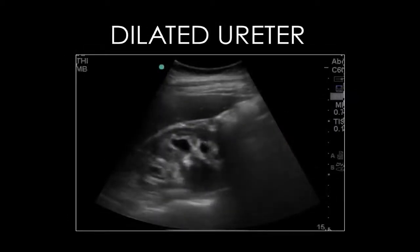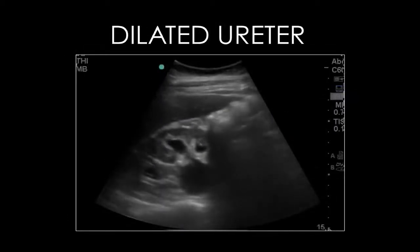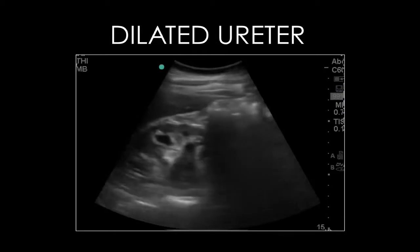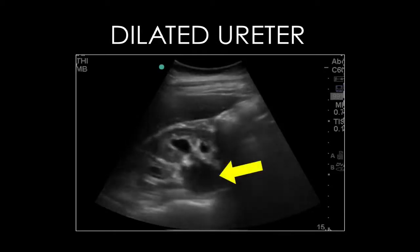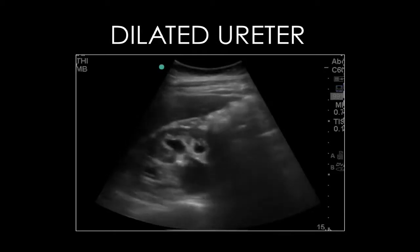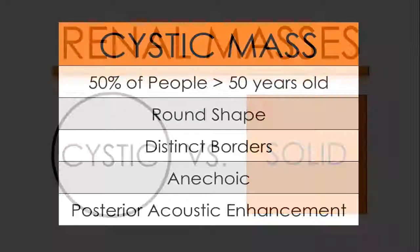Typically, it is not possible to see the ureters by ultrasound, but if there is prolonged pressure caused by obstruction, then it may be possible to see the dilated ureter as it exits the kidney. Renal masses are usually considered to be in one of two general categories: cystic and solid.